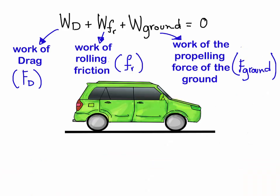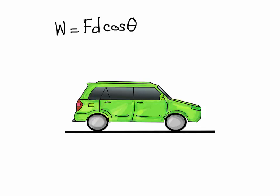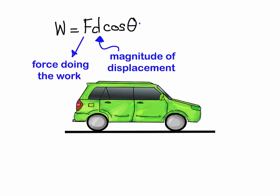Going back to the question, we have the work of drag plus the work of the rolling friction, plus the work of the propelling force of the ground equaling zero. Recall the definition of work, which is W equals F, the force, D, the magnitude of displacement, and cosine theta, the angle between them.